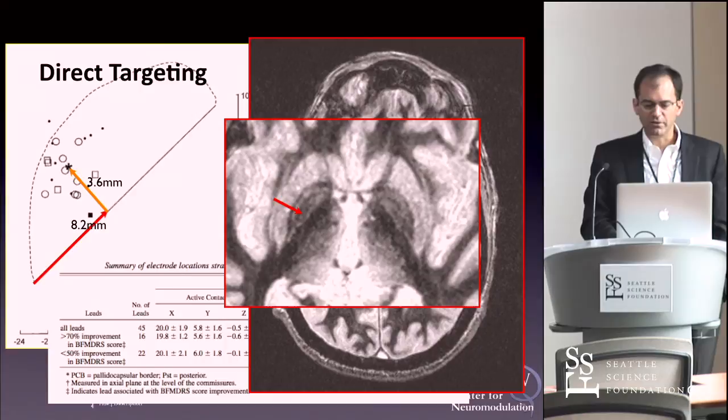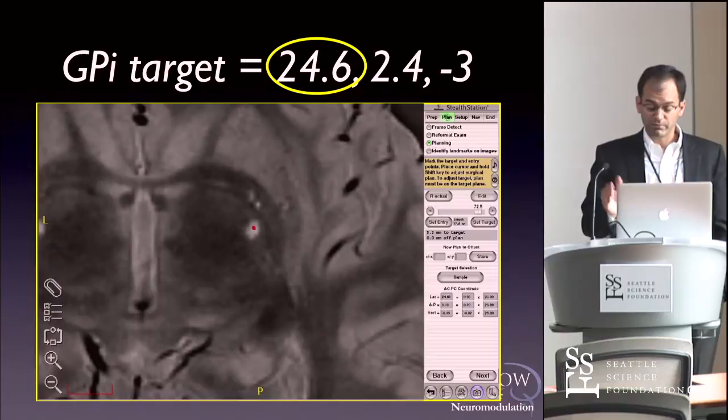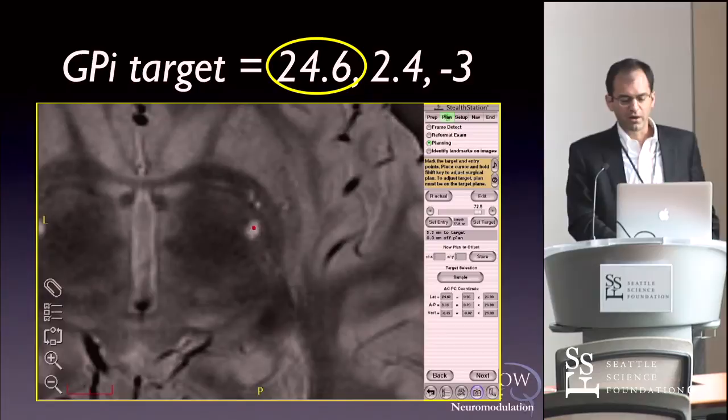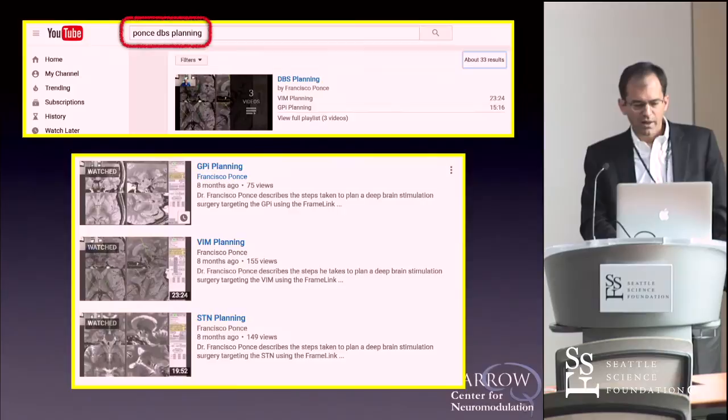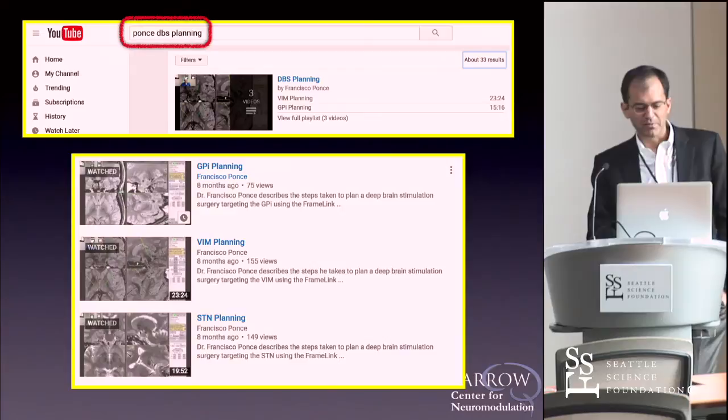Direct targeting helps refine the target enormously. In one patient, the GPi target is 25 millimeters from midline, whereas another is 18. If you're starting from a generic coordinate, it could take all day to find your way to 18 or out to 25. I have various videos on YouTube showing how to plan these different targets — GPi planning, VIM planning, and STN planning — if you search PONSE DBS planning.